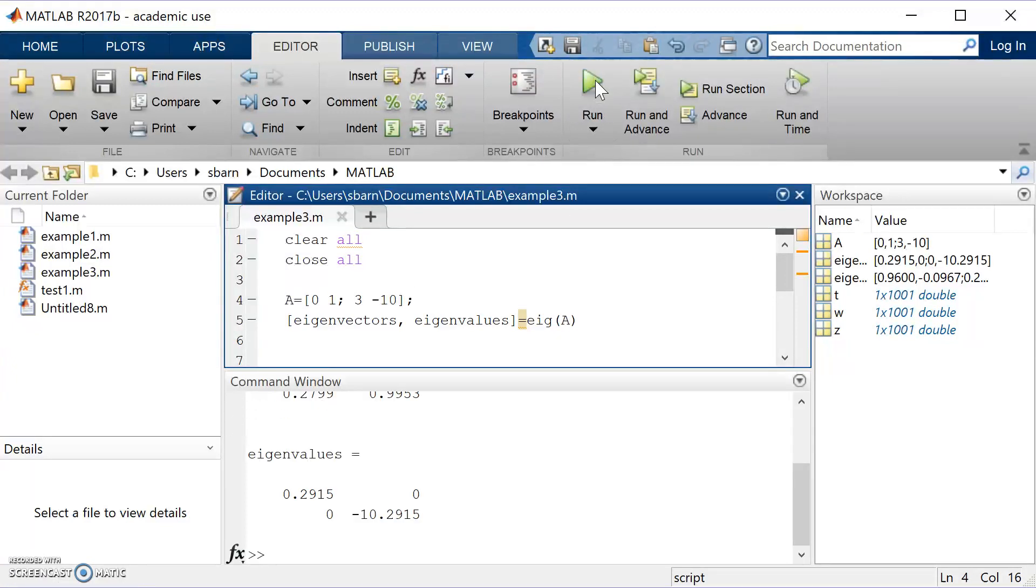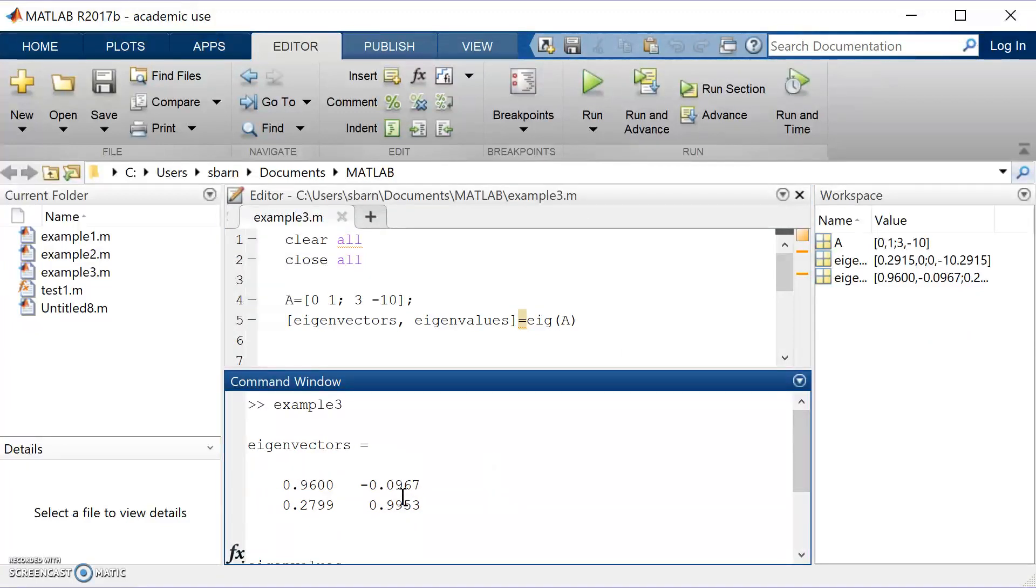So if I click run, it's going to spit me out some information. And what we can see is it's spat out a 2x2 matrix for the eigenvectors and also a 2x2 matrix for the eigenvalues.